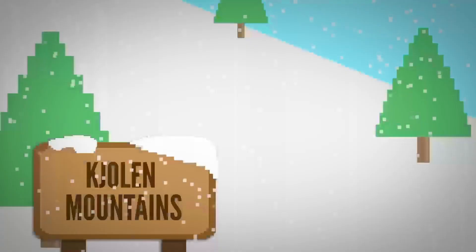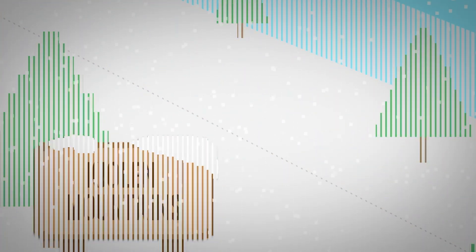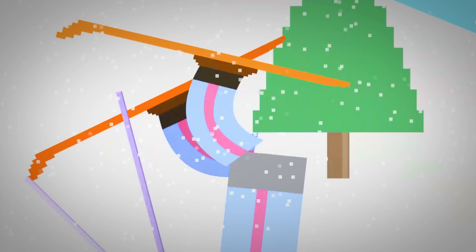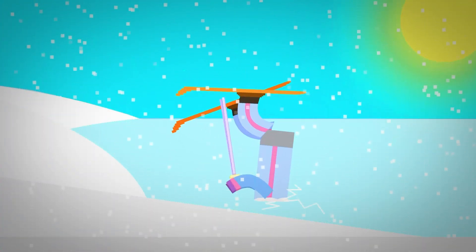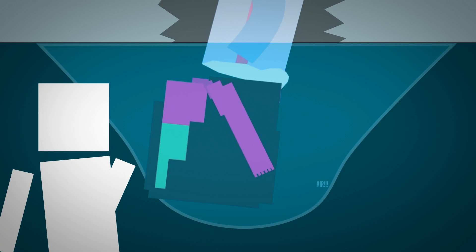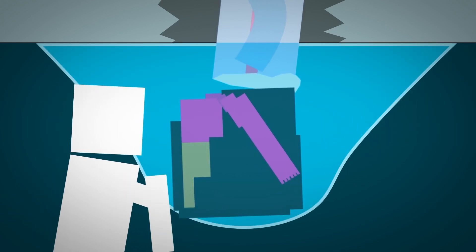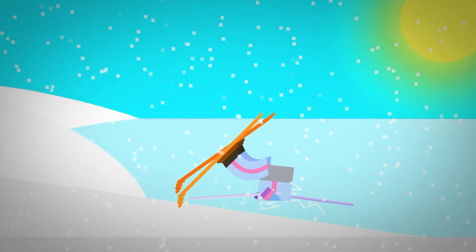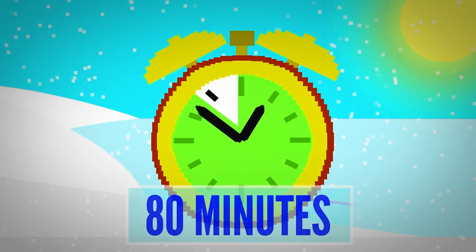Like the chilling tale of Anna Baganholm. In 1999, Anna was skiing in the Jolen Mountains. Suddenly, she lost control and began sliding down the hill, falling headfirst into a frozen stream and getting stuck halfway through the icy surface. Luckily, she found a pocket of air under the ice so she could breathe, but she remained stuck in the icy water for 80 minutes.